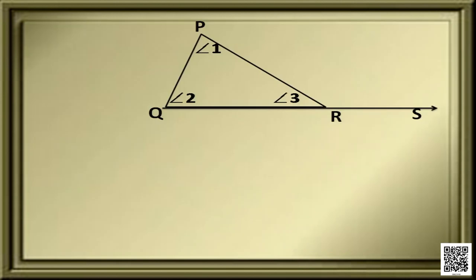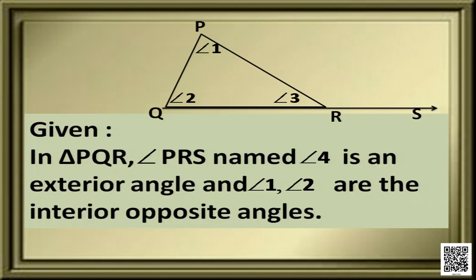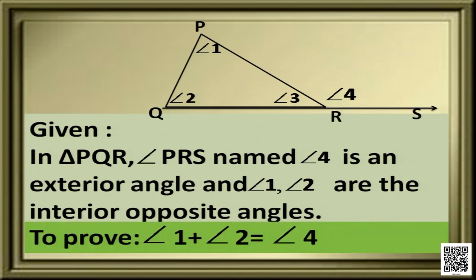Let's have a look at the figure. In this figure, the interior angles of triangle PQR are marked as angle 1, 2, and 3. In triangle PQR, angle PRS is named as angle 4 and that is the exterior angle. Angles 1 and 2 are the interior opposite angles. What to prove? We have to prove, according to this theorem, that angle 1 plus angle 2 is equal to angle 4.